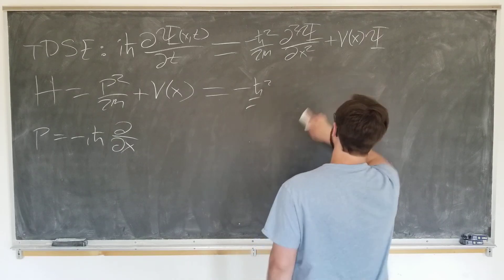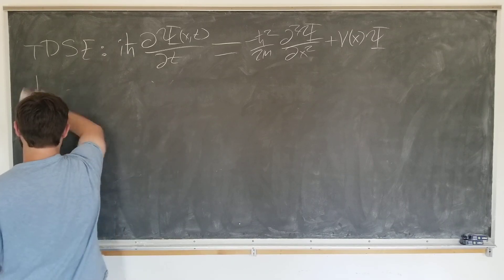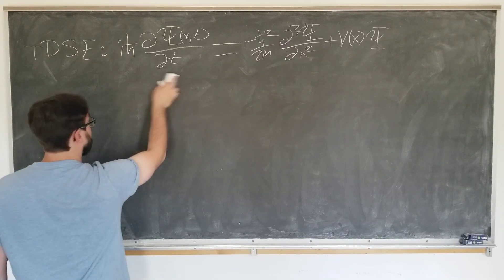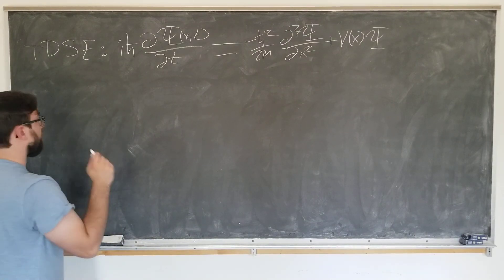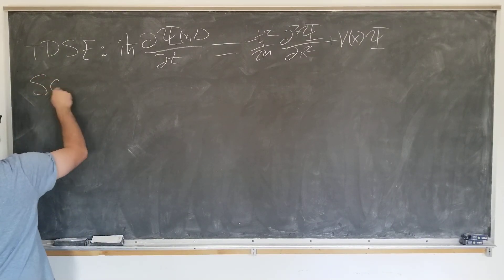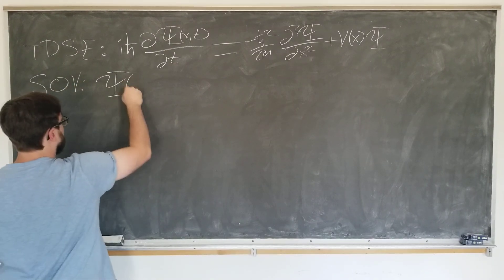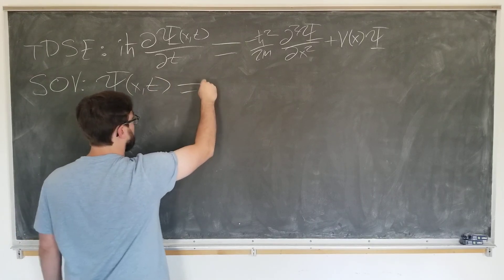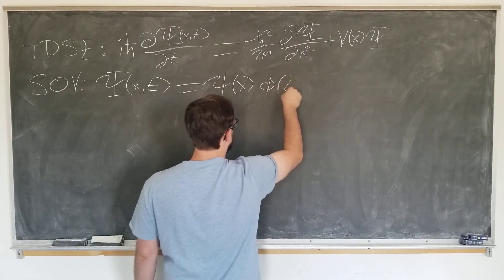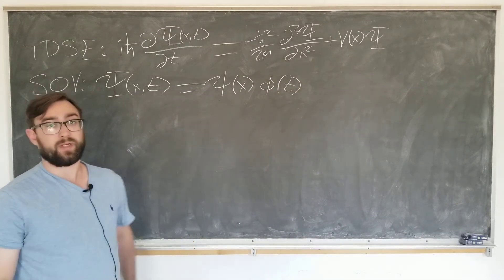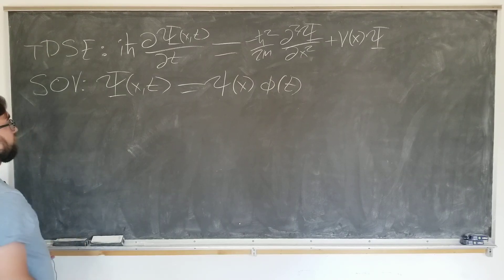This is the partial differential equation we want to solve to derive the time-independent Schrödinger equation. We're going to do this by using the first line of attack that a physicist has: separation of variables. We're going to let capital Psi(x,t) equal lowercase psi(x) times phi(t). When we do this we're going to actually change the partial derivatives into total derivatives.